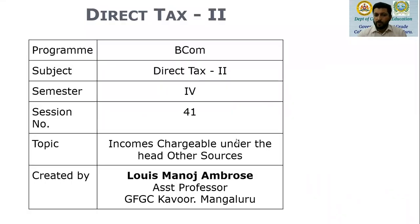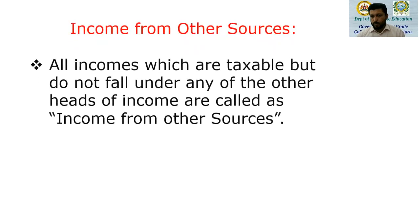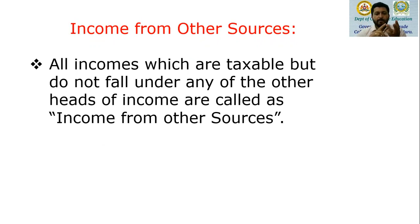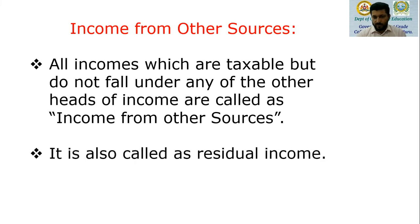In this session, we are going to discuss about incomes chargeable under the head 'other sources'. First of all, why is this heading called income from other sources? We have all incomes which are taxable, but if they do not fall under any other head of income — say salary, house property, business or profession income, or capital gain — such income will come under the heading income from other sources. Because of this reason, this heading is also called residual income.